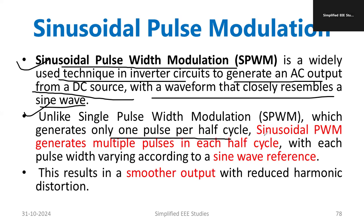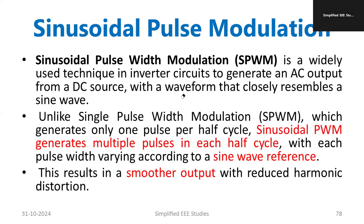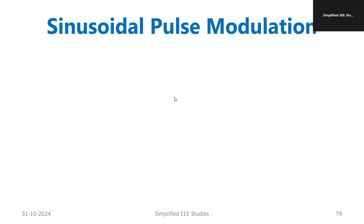in sinusoidal pulse width modulation technique we generate multiple pulses in each half cycle, so that harmonic content will be minimized. Moreover, the output waveform will be almost similar to that of a sine wave, so we take a sine wave as a reference. This ensures a smoother output compared to other techniques — that is a key characteristic of sinusoidal pulse width modulation.